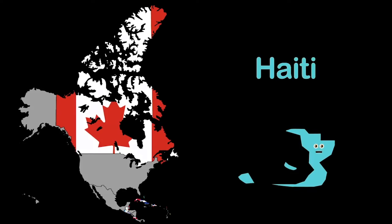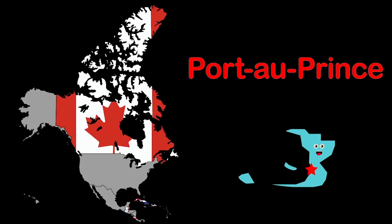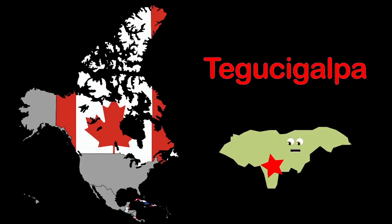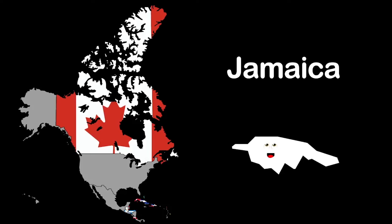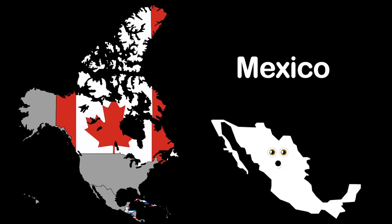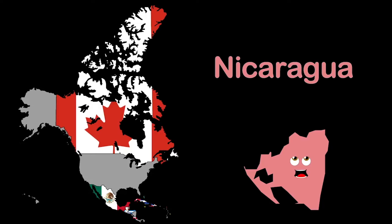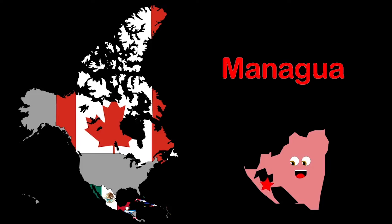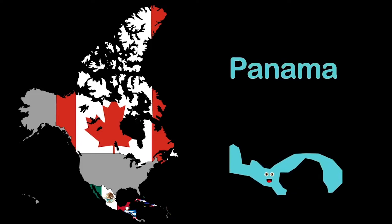I'm Haiti — I share an island with the Dominican Republic, my capital is Port-au-Prince. I am Honduras, right next to El Salvador — Tegucigalpa is my capital. I'm Jamaica, a Caribbean island nation — my capital is Kingston. I am Mexico, south of the USA — Mexico City is my capital. Nicaragua, between Costa Rica and Honduras — my capital Managua is a city and that's a plus.